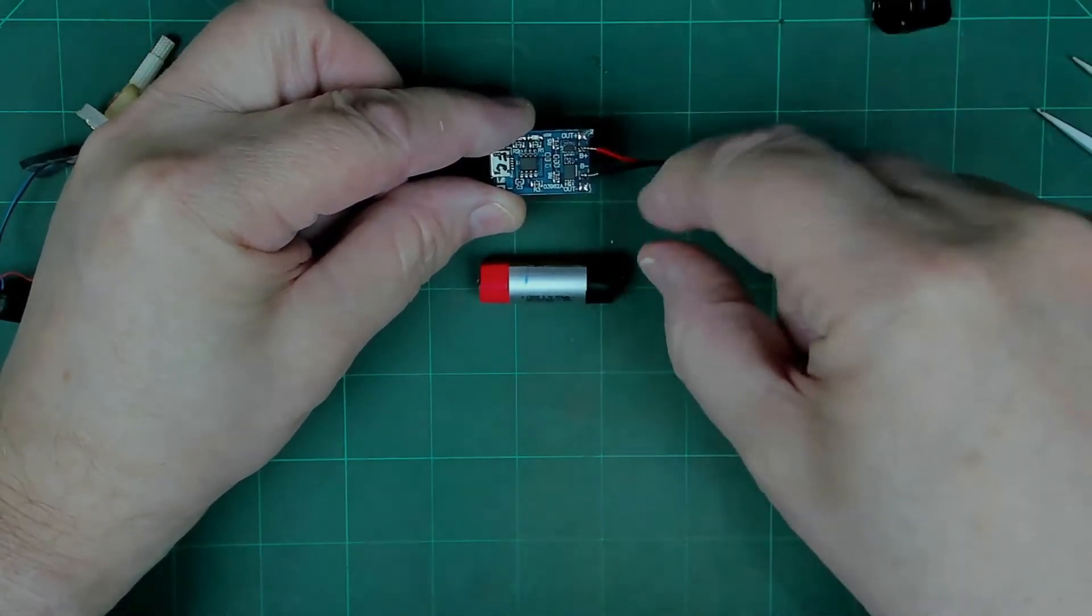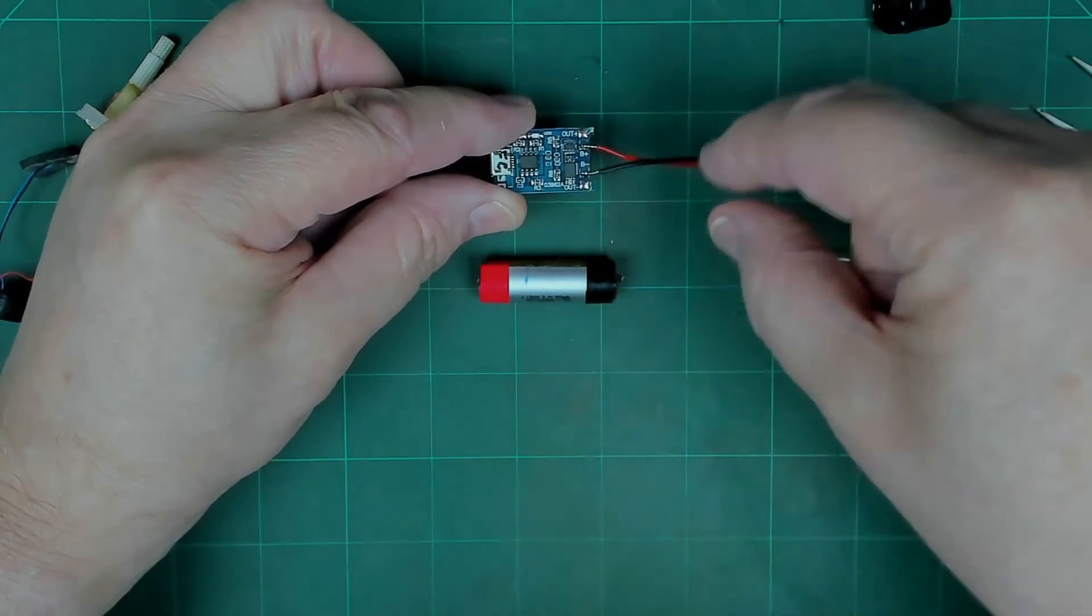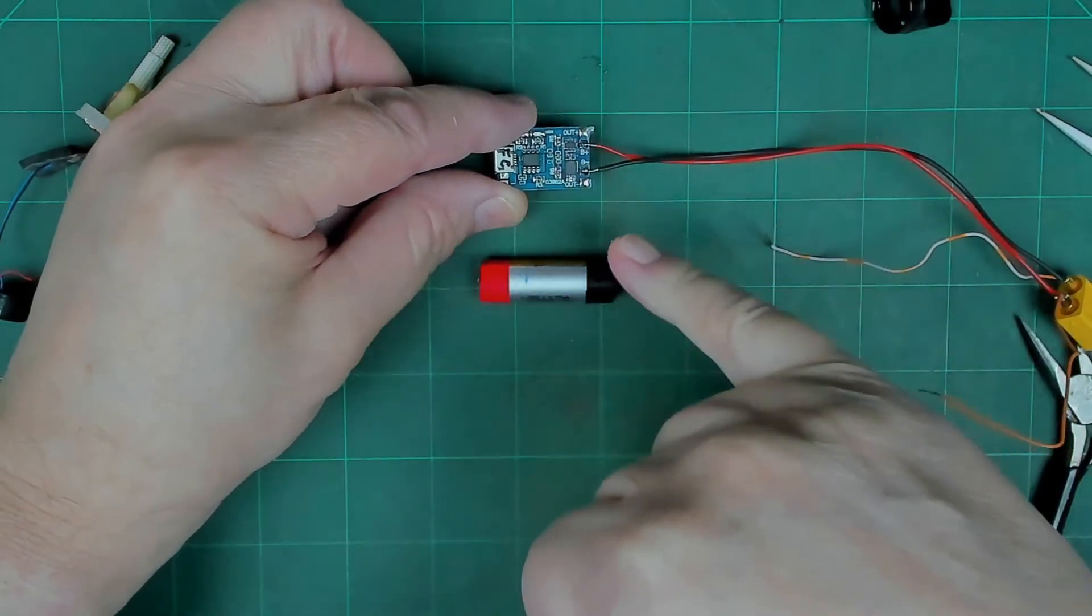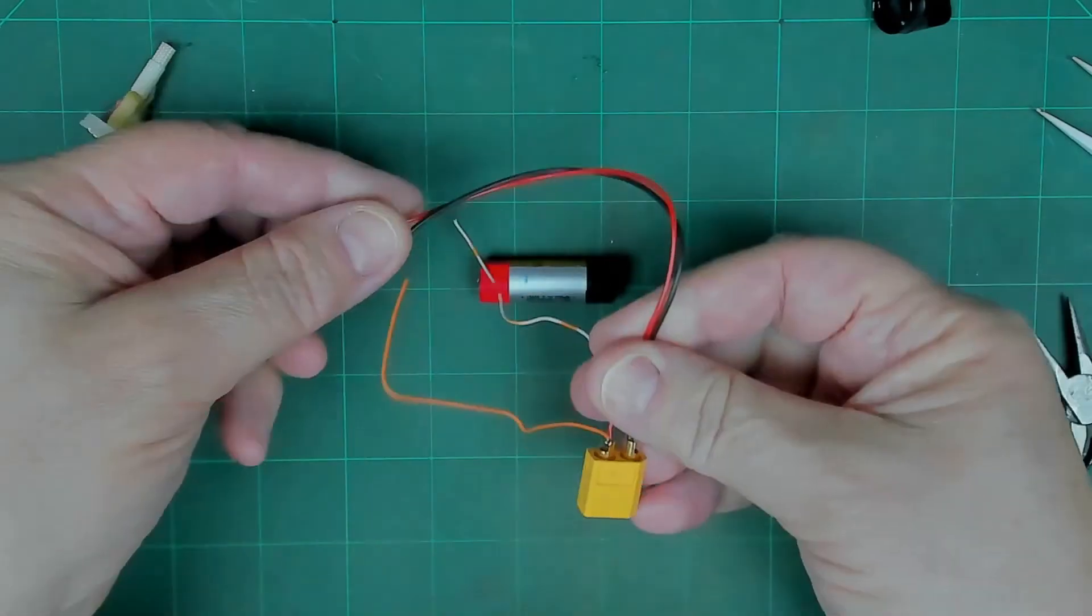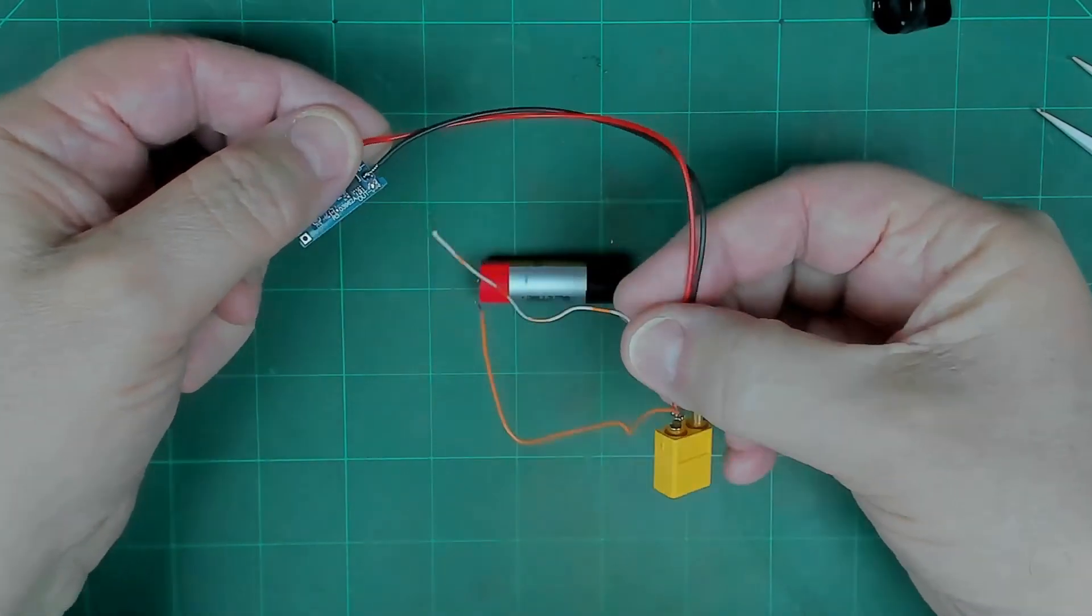That will charge the battery, and then you take the output from there, from the battery out. It senses battery in and out. So that's what we're going to do. I've got this one pre-prepared with some extra sockets and things on.